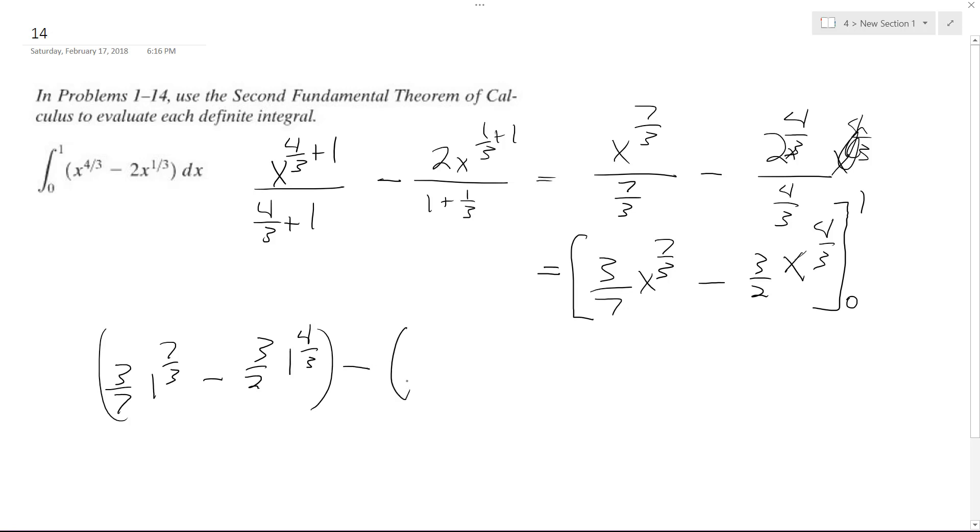The minus quantity, well, we have zero in here, it just makes everything go to zero. So what we have is three sevenths minus three halves,